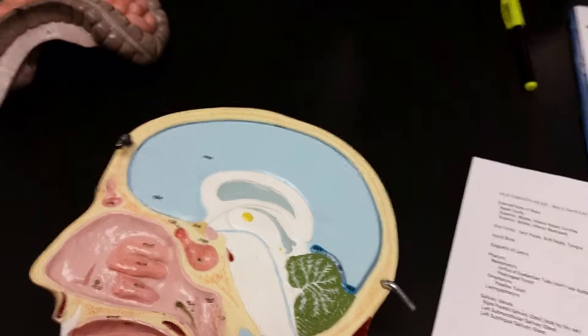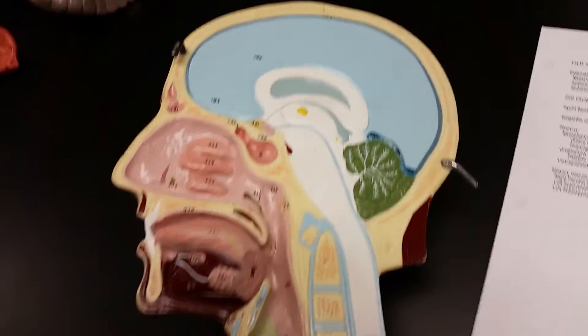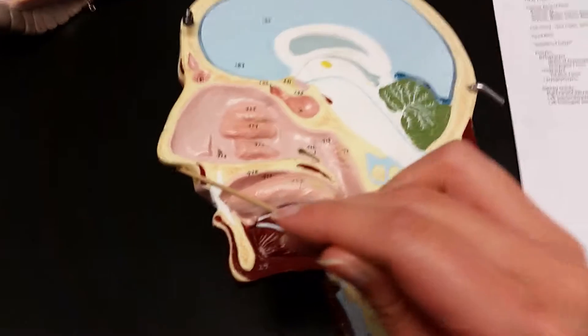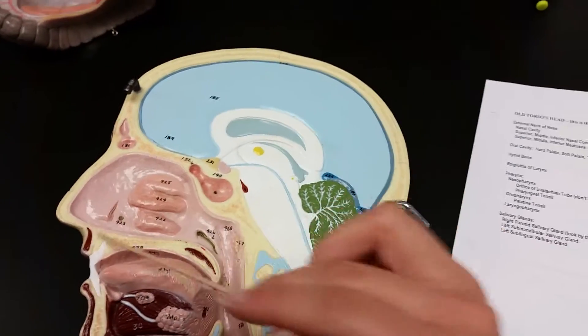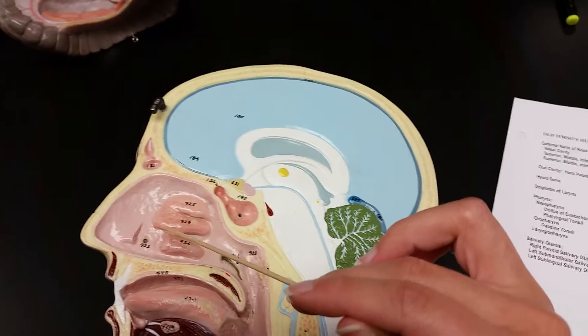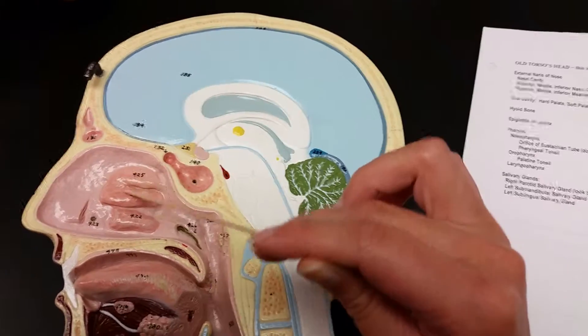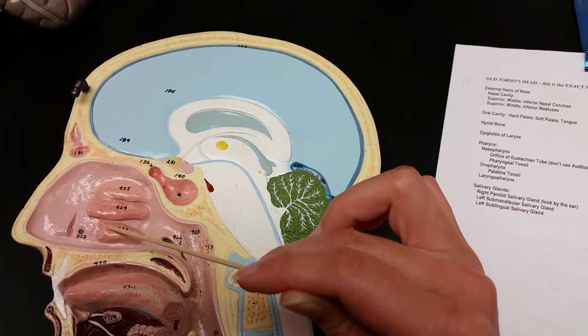This is page 15, the old torso's head. This is the external nares of the nose, and the nasal cavity would be here. The superior nasal concha would be here, middle nasal concha would be here, inferior nasal concha would be here.